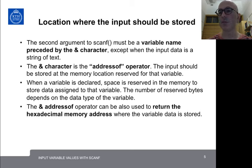The second argument to scanf is a variable name preceded by the ampersand character. This holds except when the input data is a string of text. The ampersand character has several uses in C programming, but in this context, it means the address-of operator. This means that the input should be stored at the memory location reserved for that variable.